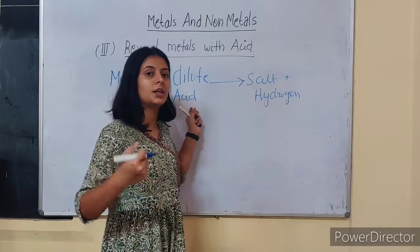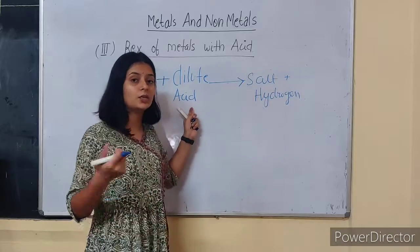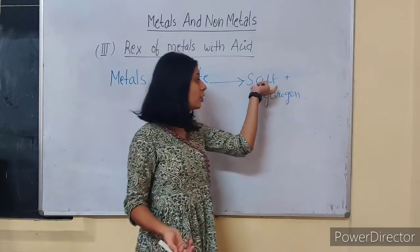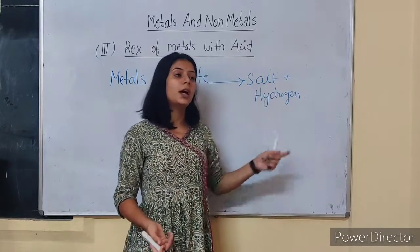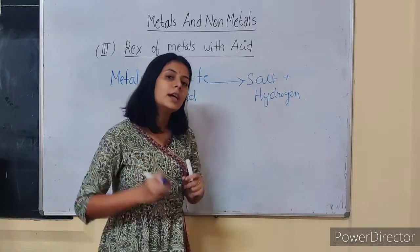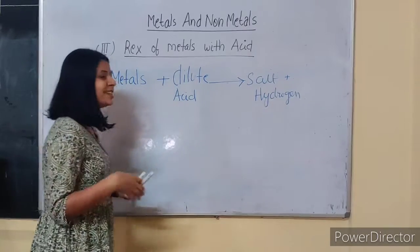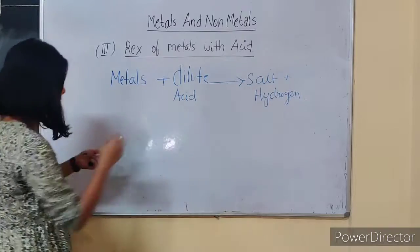So metals react with dilute acids like dilute nitric acid, dilute hydrochloric acid, and dilute sulfuric acid, and they will always give salt along with release of hydrogen gas in the reaction. Let's see some examples.